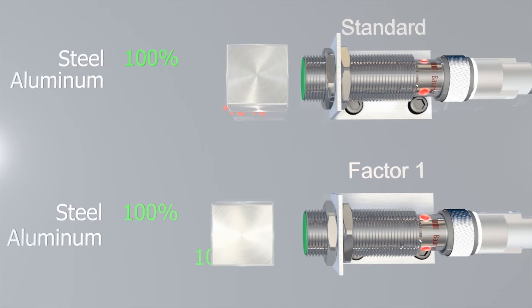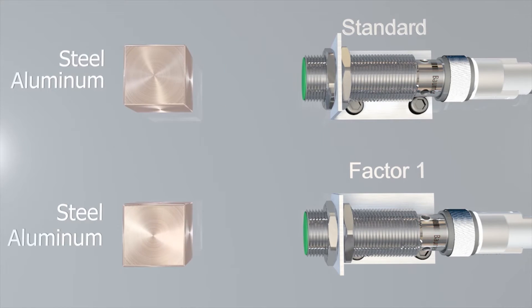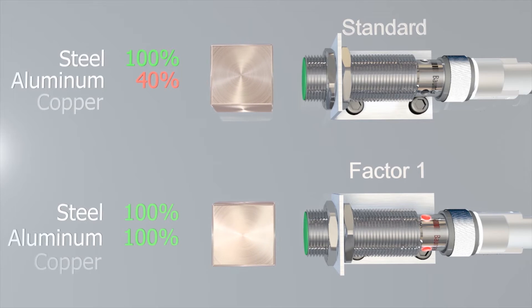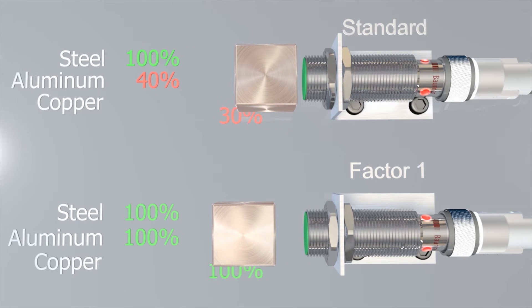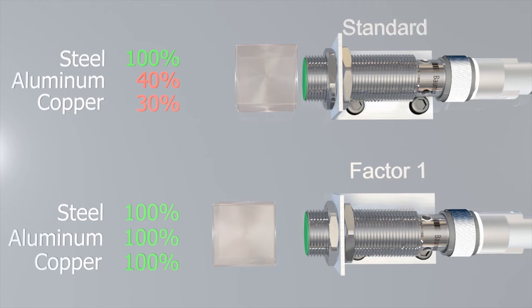Aluminum will reduce the switching distance down to about 40%. With copper only 30% are left which will significantly impair installation flexibility.